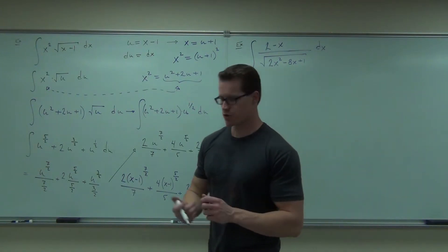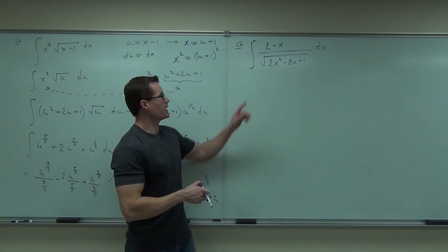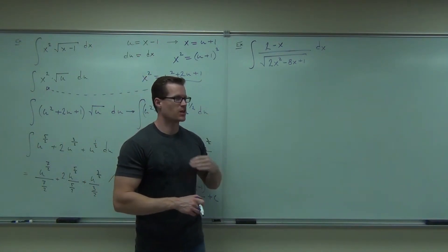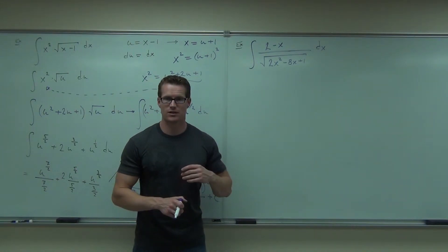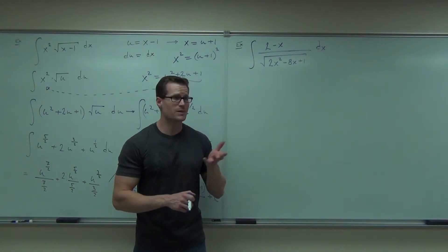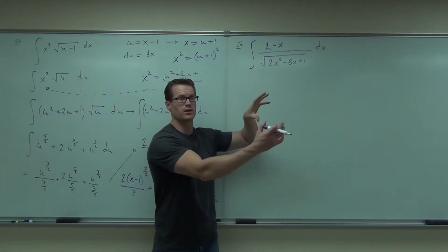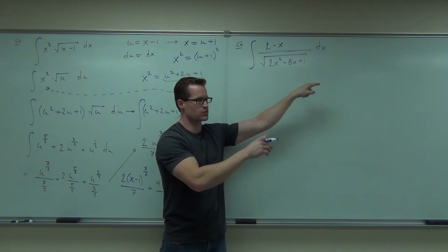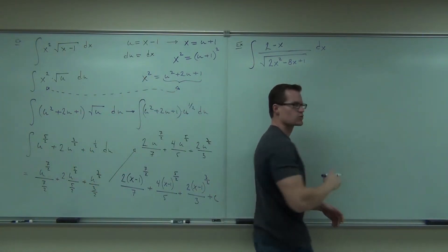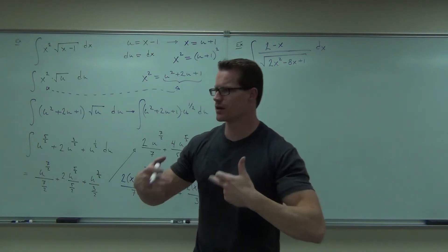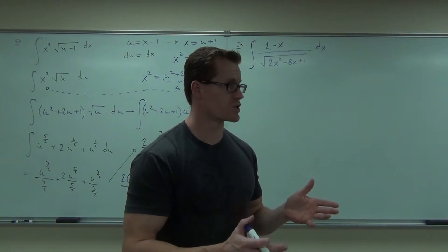We'll finish this off next time, but I want to at least talk about the first step. What's a good choice for your u? Is it 2 minus x? Is it including the square root? Is it the 2x squared minus 8x plus 1? Probably. If it's going to be anything, it's probably that. You don't want to pick just a little piece of that. If you're going to pick something, pick the whole thing inside, right? Not the whole thing including the square root, but the whole inside part for sure.